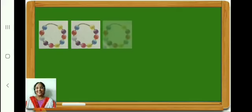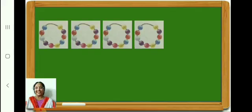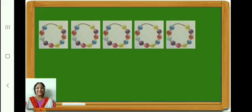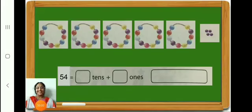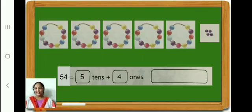Count and see how many beads. 10. Second box, 10. Third box, 10. Fourth box, 10. Fifth box, again 10. In the sixth box, 4. In all, how many beads? 54. 54 is equal to 5 tens plus 4 ones. Write it down in your book. Now write the number name 54. Finish?